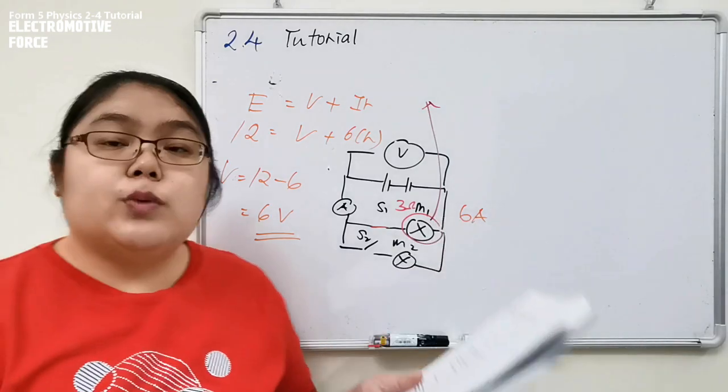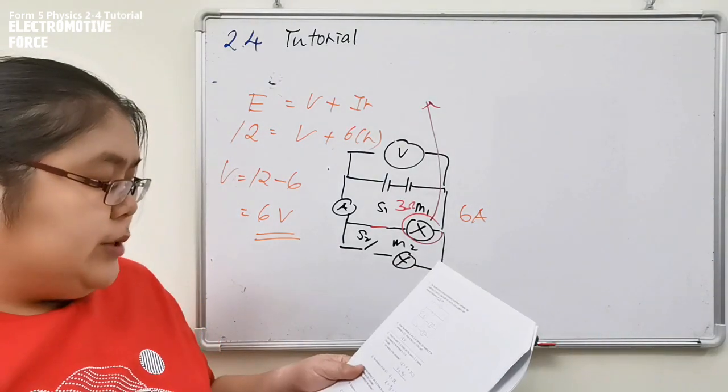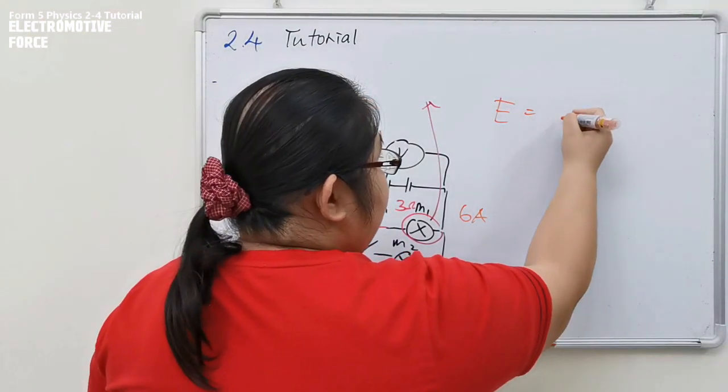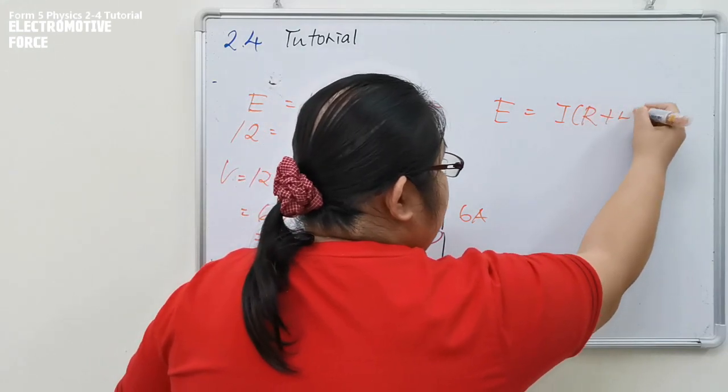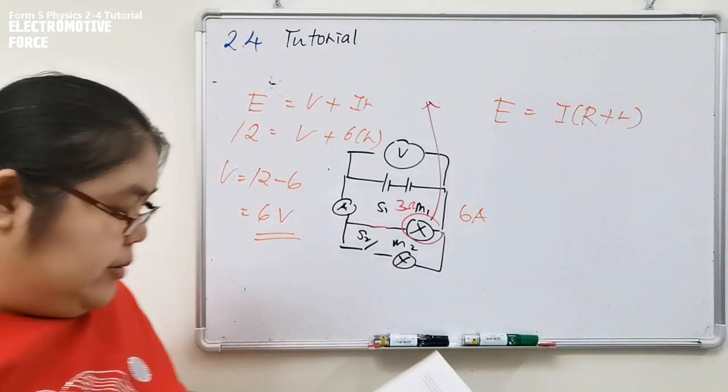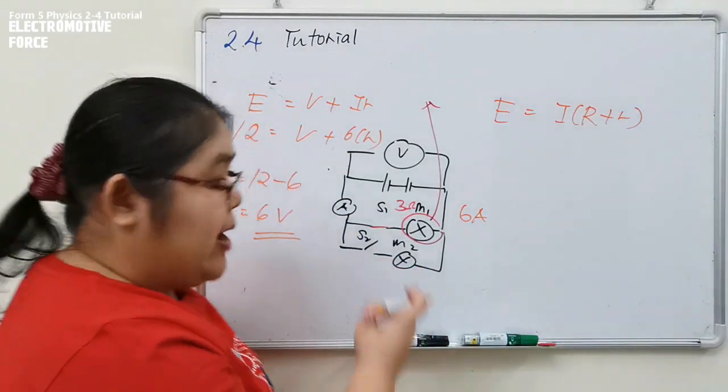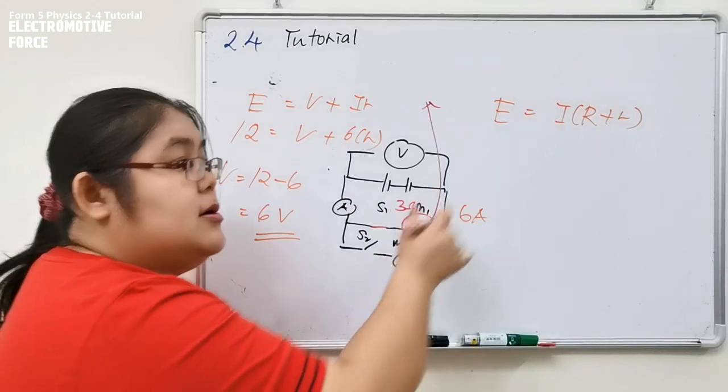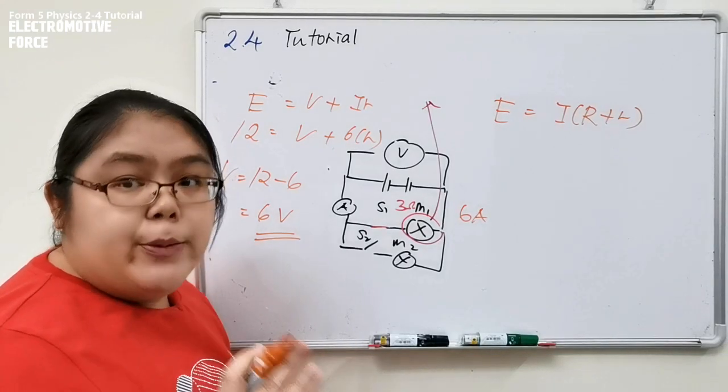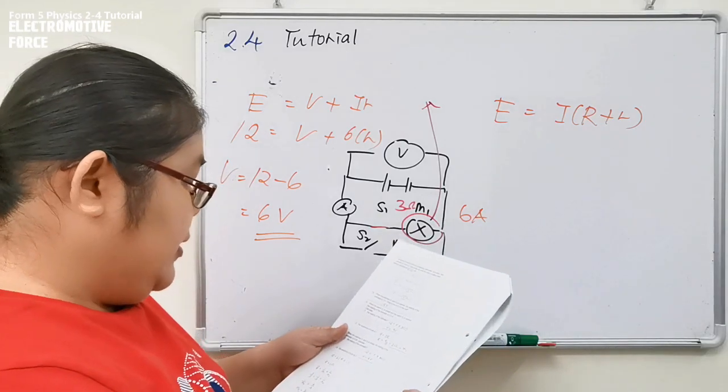The last one they want to find M2, resistance 2. That means we need to use the EMF formula, E equals I times capital R plus small r. We need to find the external resistance R, which includes M1 and M2. Later you'll find the answer, you need to separate M1 and M2 because we know M1 but we don't know M2.